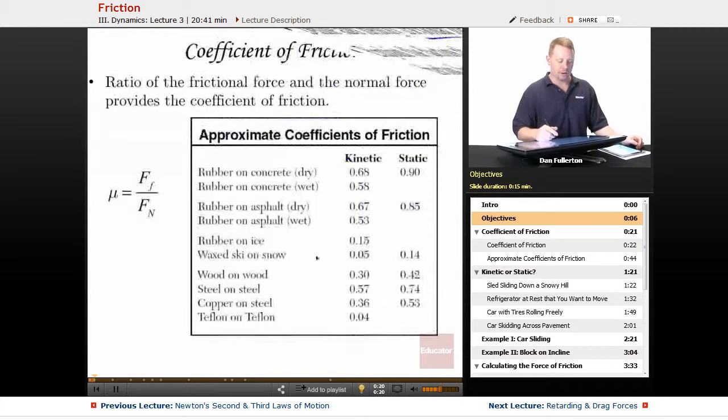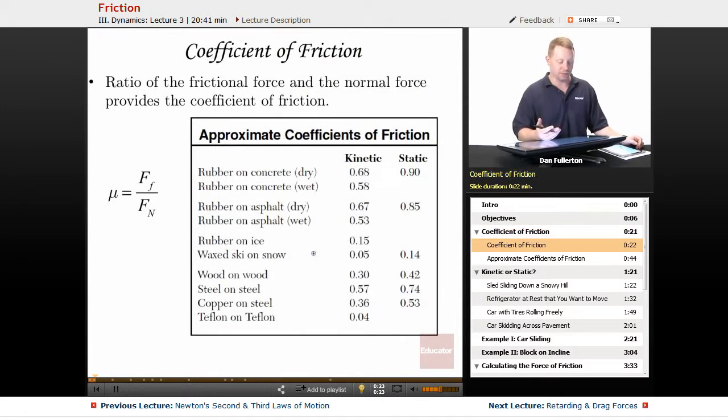So let's start off by talking about the coefficient of friction. The ratio of the frictional force to the normal force provides the coefficient of friction. Mu is the coefficient of friction, it's unitless, and it's the force of friction divided by the normal force. Friction is caused by the interaction of two objects, and this coefficient of friction depends on the nature of the surfaces.